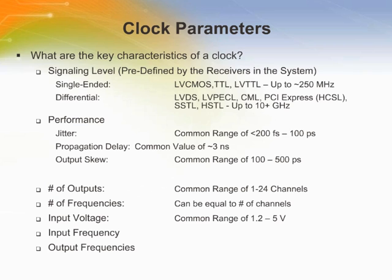For example, if you are choosing a clocking device to support a communication base station, you would be using a differential signal that supports higher frequencies such as LVDS or LV-PECL. The second characteristic used to determine the appropriate solution is the required system performance. Common performance metrics are jitter, propagation delay, and output skew. Other factors to consider in selecting a clocking solution will be the number of outputs needed, number of frequencies, the input voltage and frequency, and the required output frequencies.